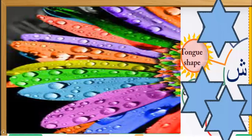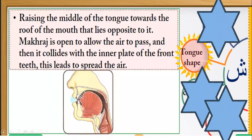What is the shape of the tongue when you pronounce letter Sheen? Shah, shah. The shape is raising the middle of the tongue towards the roof of the mouth that lays opposite to it. The makhraj is open to allow the air to pass, and it collects with the inner palate of the front teeth. This leads to spreading the air: shh, shh.